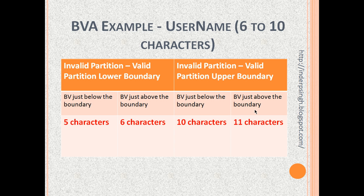Let us look at another BVA example: the username accepted between 6 to 10 characters. There are 2 boundaries. At the lower boundary, a 5-character username is just below the boundary and should be rejected; a 6-character username is just above the boundary and should be accepted. At the upper boundary, a 10-character username lies just within the boundary and should be accepted, while an 11-character username is just outside and should be rejected. In BVA, we test on either side of the boundaries of each valid partition.